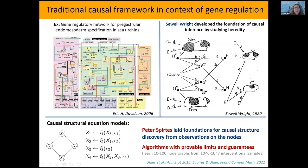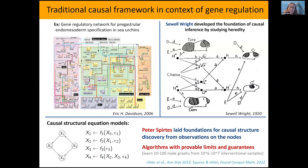Here we would often only have data on the nodes — for example gene expression data, where every node is a gene — and we'd like to learn the edges corresponding to regulatory relationships. Peter Spirtes laid the foundations for causal discovery from observational data, and we've done a lot of work on understanding how many samples are needed to learn these networks from data, even with interventional data. Generally, even current data sets of 100,000 to a million samples are only sufficient to learn a network on 10 to 100 nodes — you'll never be able to go to something like 20,000 nodes.